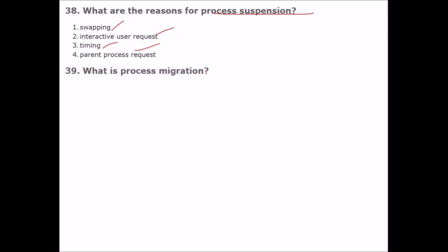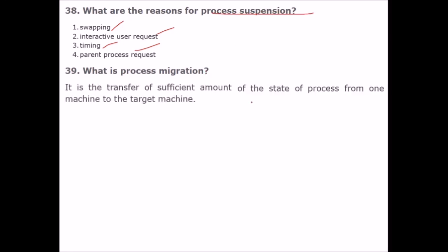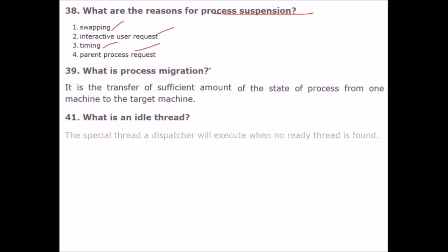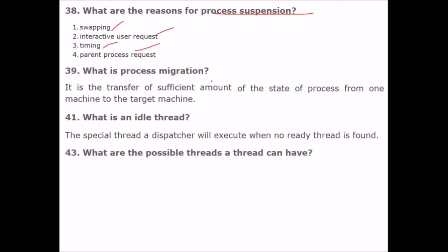What is process migration? It is the transfer of a sufficient amount of the state of a process from one machine to another. What is an idle thread? A special thread or dispatcher that executes when no ready thread is found.